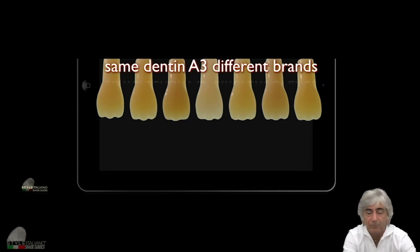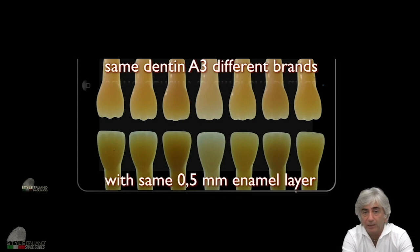It's not so easy. Only to explain a little bit better the concept, look at here. You have different A3 dentine, different brands. You will see with the light that probably it's not so easy to understand which is the real A3 one. But you say, I have different dentine, but now I put the same enamel layer over, 0.5 mm. What happens? You obtain seven different colors at the end of the story.